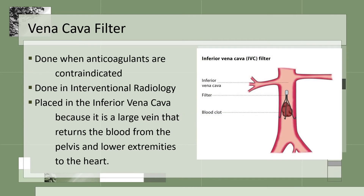When a patient has a DVT or is prone to clots and anticoagulants are contraindicated, they will get a vena cava filter. This is done in interventional radiology and placed in the inferior vena cava — a large vein that returns blood from the pelvis and lower extremities to the heart.